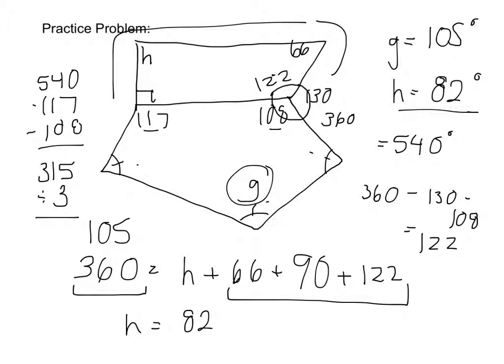As you can see, we used our knowledge of the sum of a polygon's measures to find these missing angle measures.